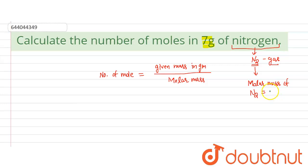So the number of moles of N2 is equal to given mass 7 divided by 28, which equals 1 by 4, which is 0.25 moles of N2. Therefore, the number of moles of N2 equals 0.25 moles.